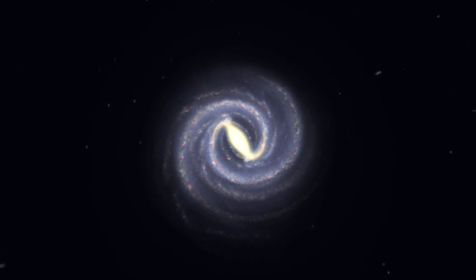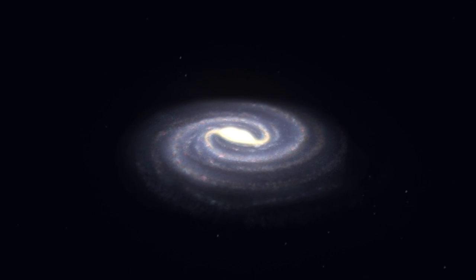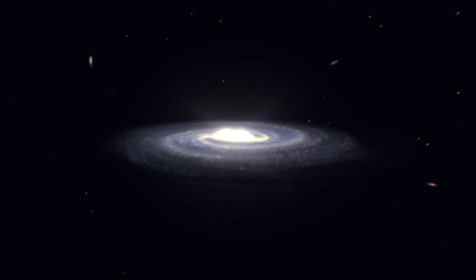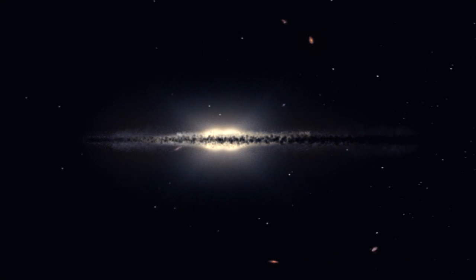Our Milky Way is thought to be a barred spiral galaxy, measuring 100,000 light years across and containing roughly 200 to 400 billion stars. It is about 13.2 billion years old, making it almost as old as the universe itself.